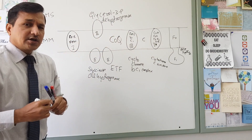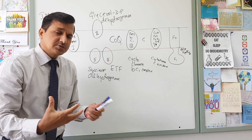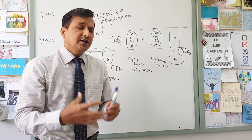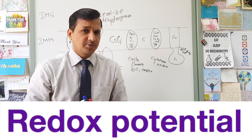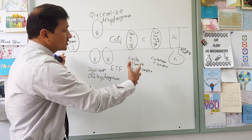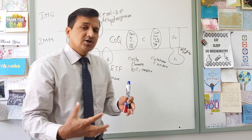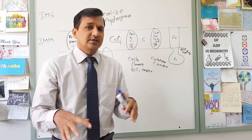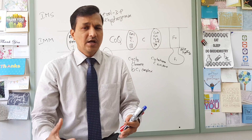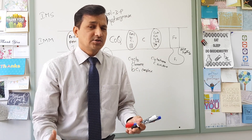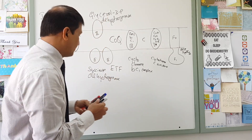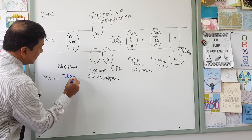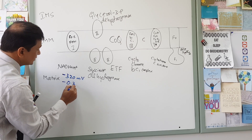This is how the electron transport chain is arranged in the inner mitochondrial membrane. Where NADH and FADH2 enter the electron transport chain depends on the redox potential of the molecule. The electron transport chain works on redox potential: any molecule with a higher negative redox potential acts as an electron donor. NADH plus H+ has a redox potential of negative 320 millivolts, or negative 0.32 volts.